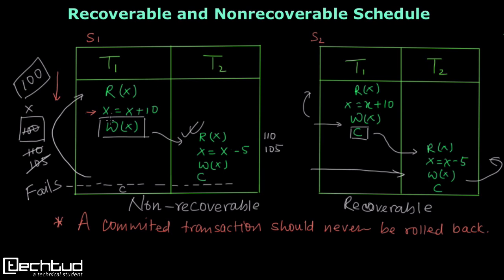A non-recoverable schedule is one where a later transaction consumes data that is not yet committed. T1 produces data without committing, and T2 starts using it — creating a high chance of inconsistency. In a recoverable schedule, T2 reads data only after T1 commits, so it is safe to read. Non-recoverable schedules should not be allowed.